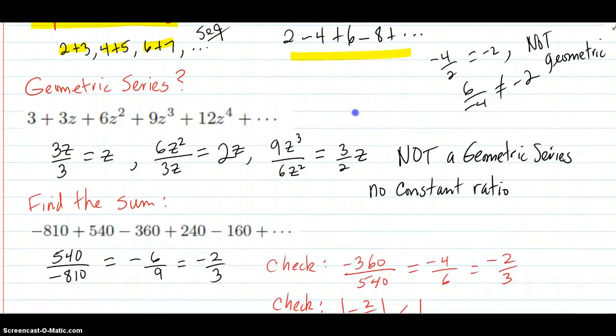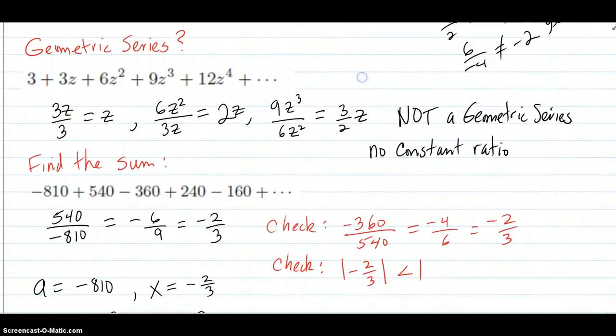Other questions you'll see: deciding if a series is geometric or not. So you just do the ratio of successive terms. 3z over 3 comes out z. 6z squared over 3z comes out 2z. You already know you're in trouble there.